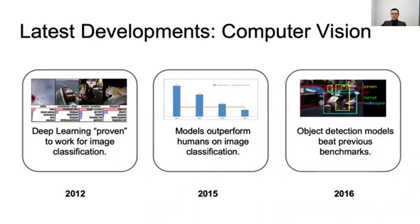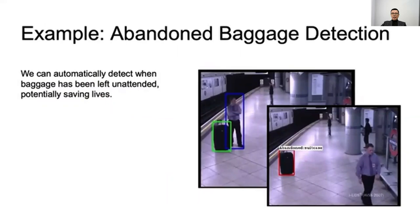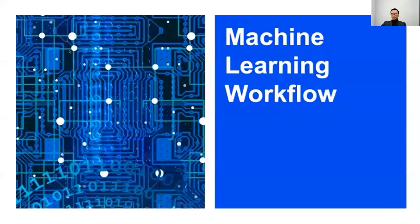In computer vision, deep learning has proven to work for image classification, with models outperforming humans on classification tasks and object detection models beating previous benchmarks. We can also automatically detect when baggage has been left unattended, potentially saving lives.